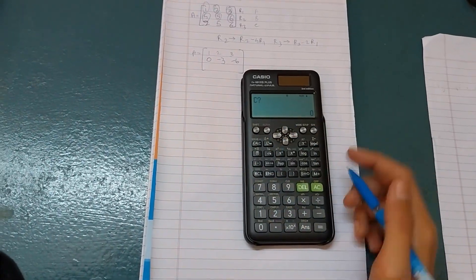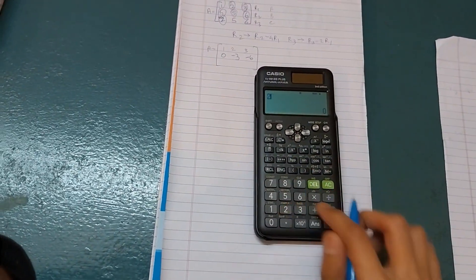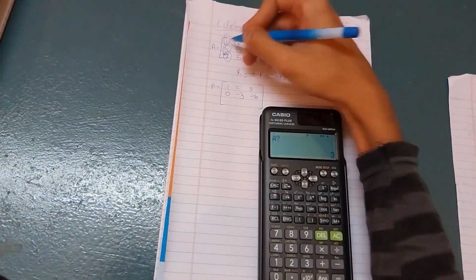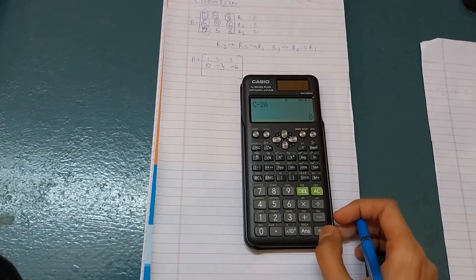Then press CAL for the C value. So C value is 2, write it as 2. And A value is 1, write as 1 and equals. So it is 0.